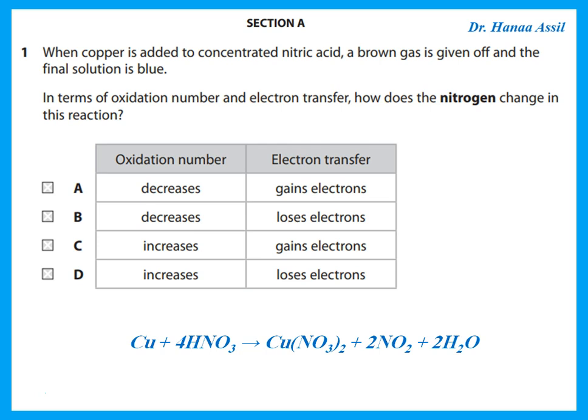The reaction is copper plus nitric acid giving copper nitrate plus nitrogen dioxide — the brown gas — and the blue solution is the copper nitrate. Let's calculate the oxidation number of nitrogen in each compound. In nitric acid, hydrogen is +1 and each oxygen is −2, so three oxygens give −6, meaning nitrogen in nitric acid is +5. In copper nitrate, copper is +2, each oxygen is −2, giving a total of −12, so nitrogen is again +5.